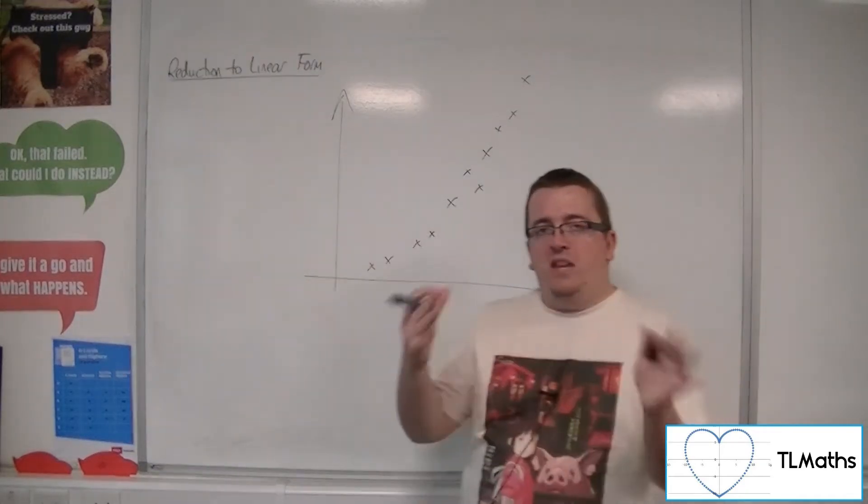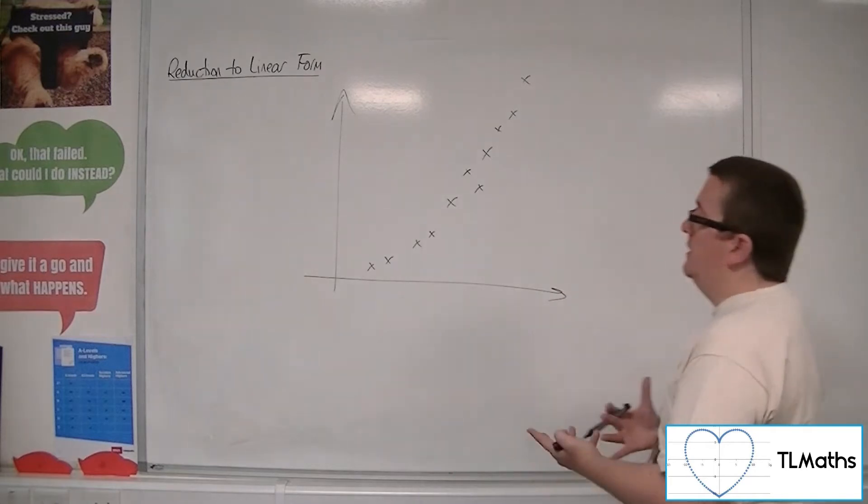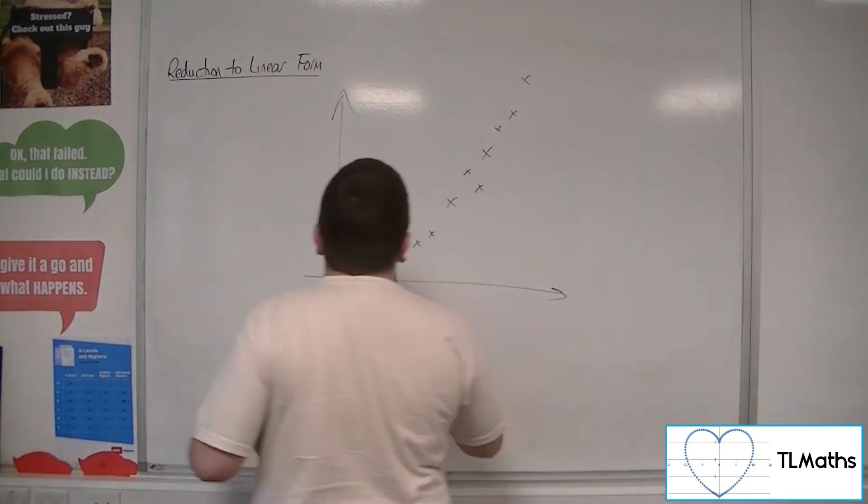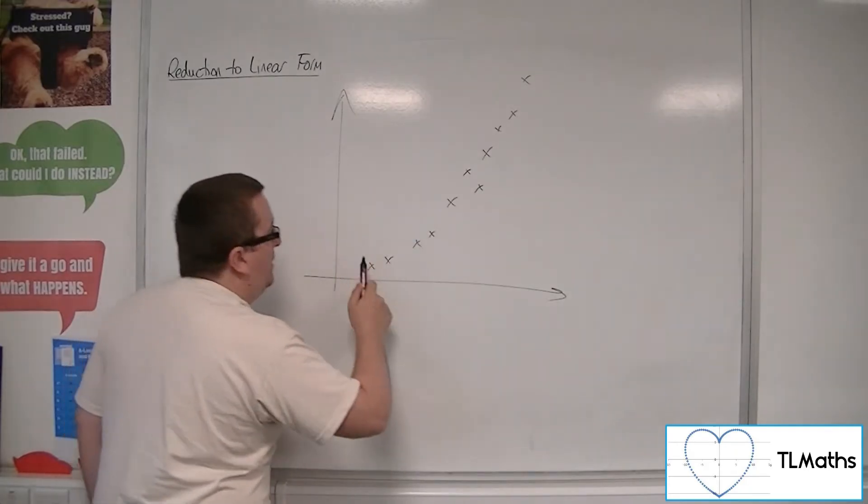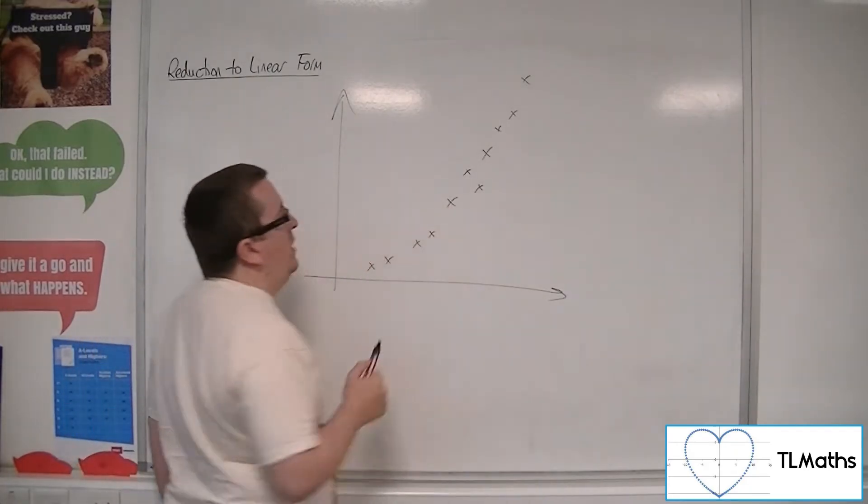So then you might go, well, there seems to be, having collected this data, some kind of relationship, the fact that as one's increasing, the other's increasing, but it's curved, it's not a straight line.